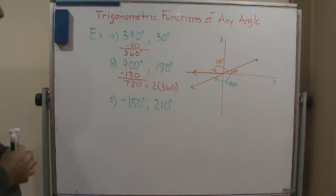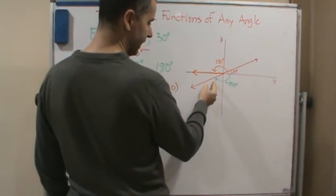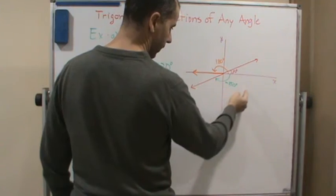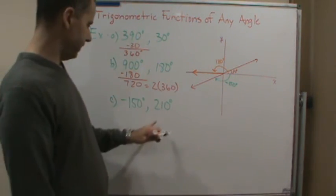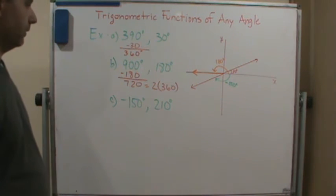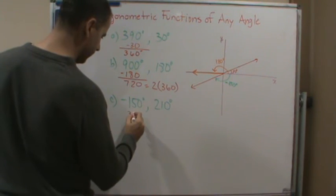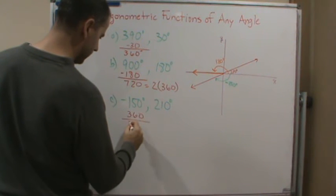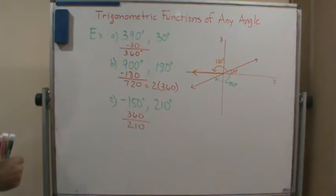Okay, now, again, if I add 360 to this, if I go all the way around, I add 360 to this, what does that give me? That gives me 210. Okay? So again, if I add 360, I get 210 degrees.